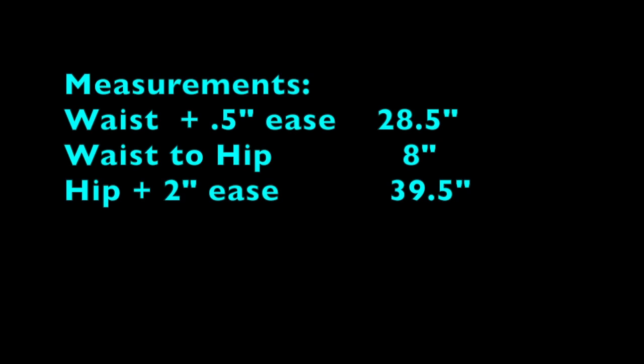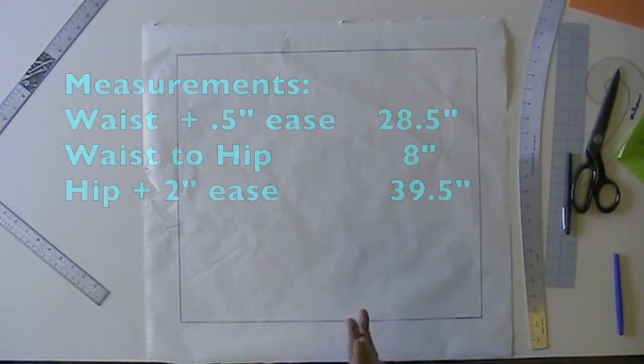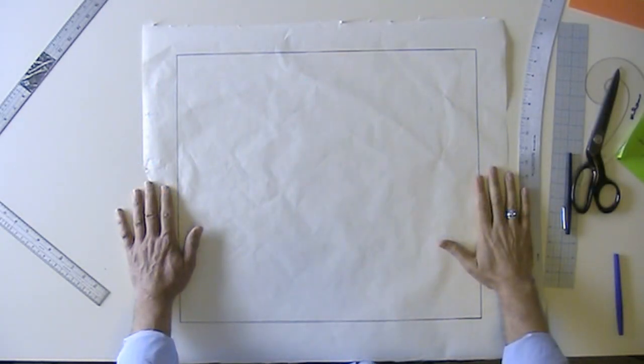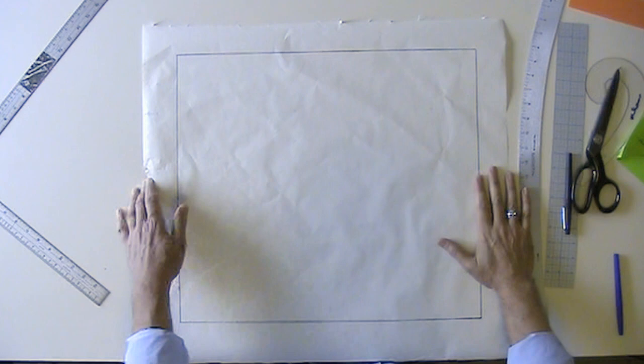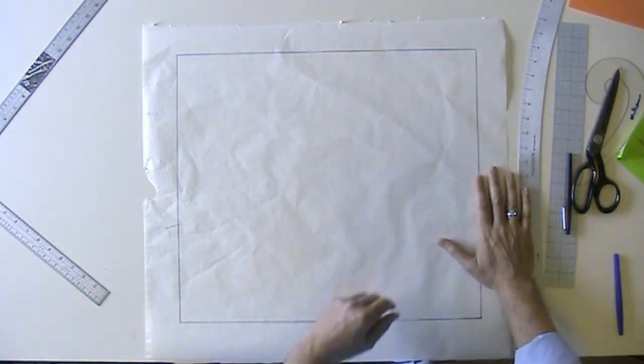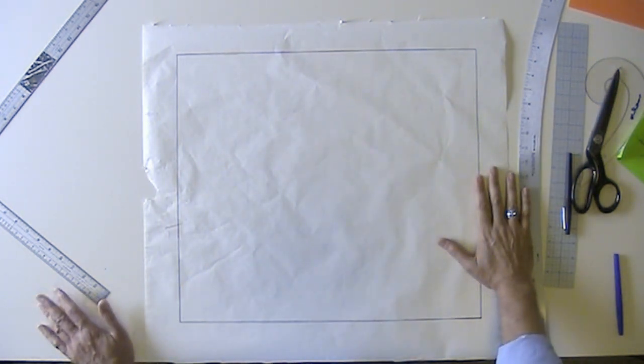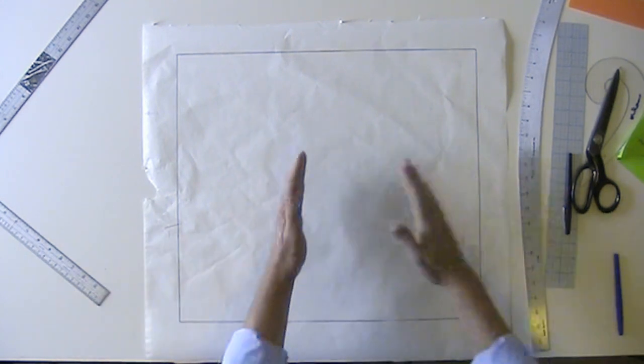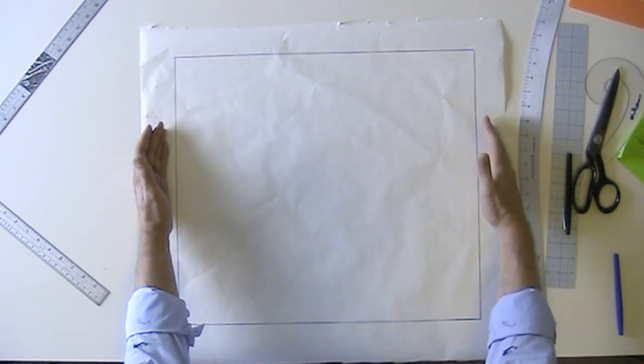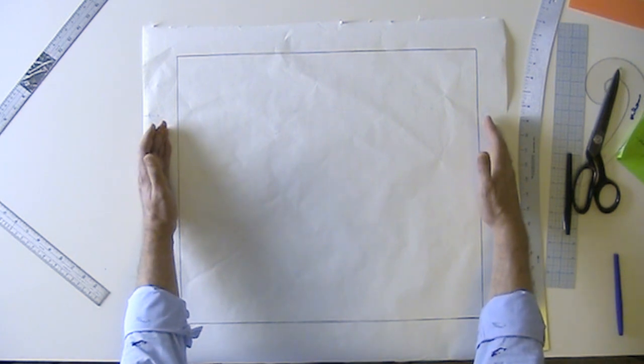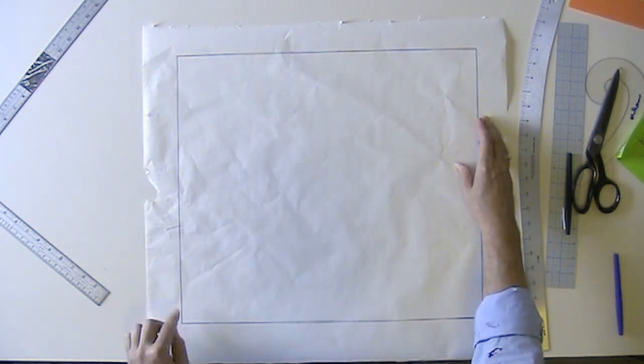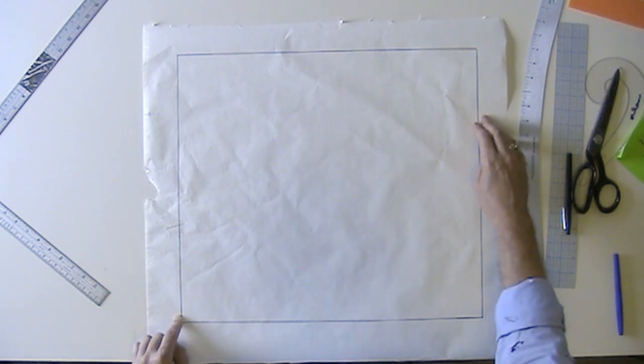For this draft we'll use the same measurements we used for the single dart sloper. The double dart sloper draft is very similar to the single dart with the exception that you're working in pairs of darts in the back and front rather than just a single dart. Just like before I've drawn a rectangle, the width of which is equal to the half hip measurement and the length to whatever length you would prefer your skirt sloper to be. In this case it's 18 inches.